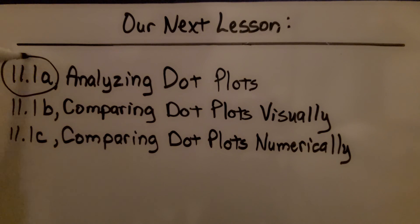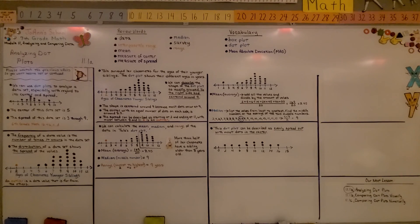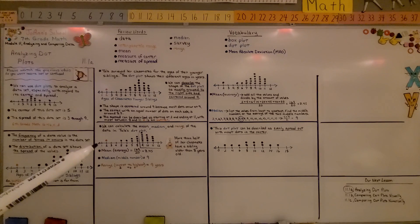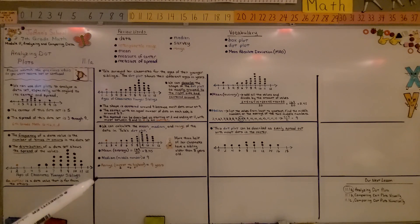So we finished 11.1a. We're going to move on to 11.1b, comparing dot plots visually. We're going to compare how they look to us. Make sure you understand how to find the mean, the median, and the range of the data values.